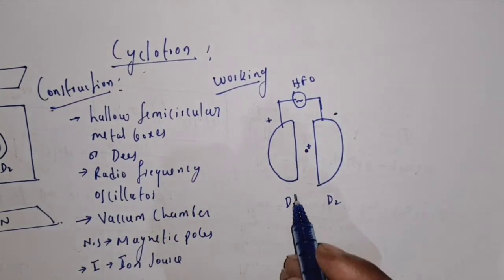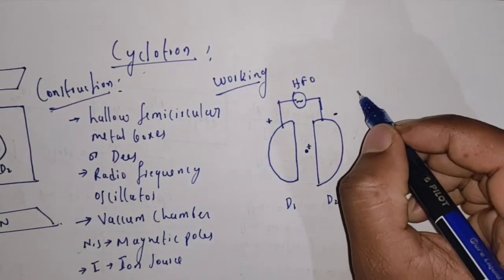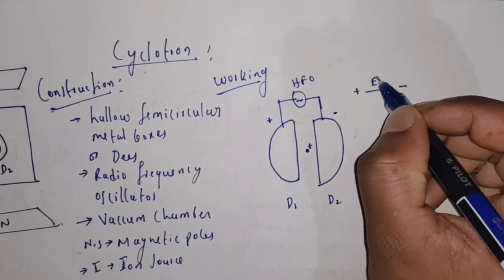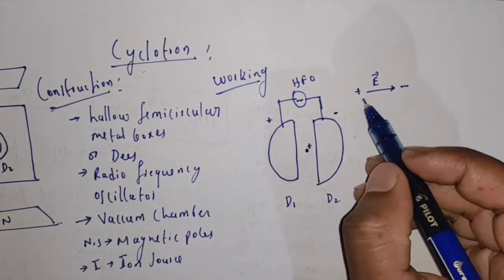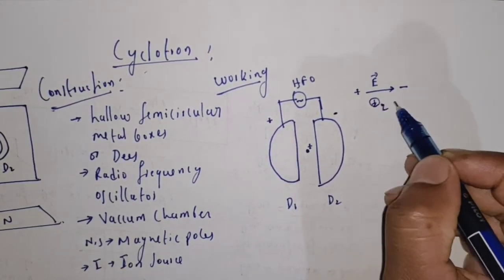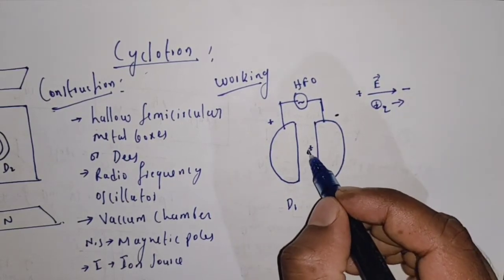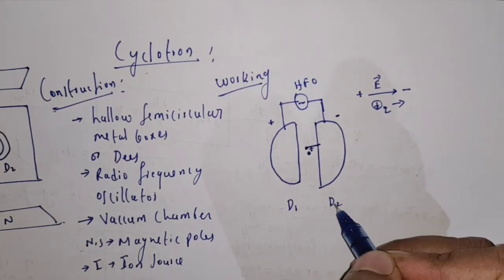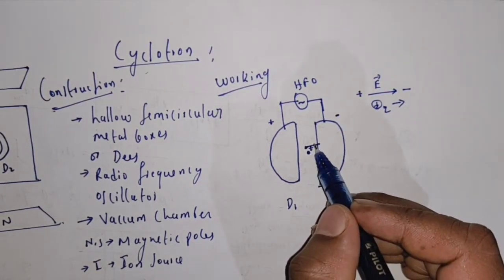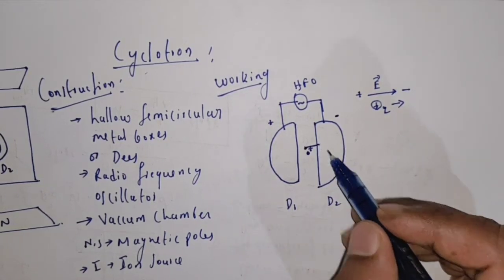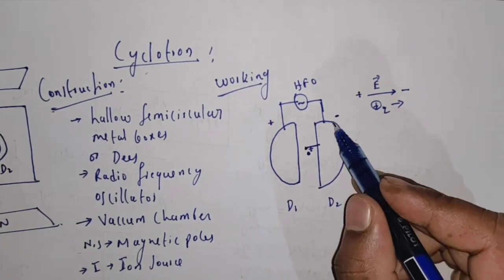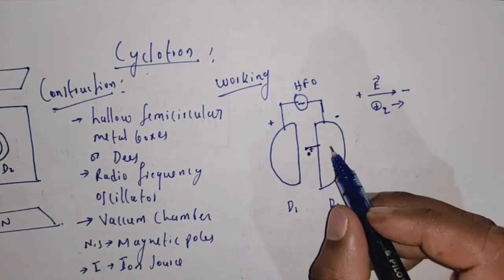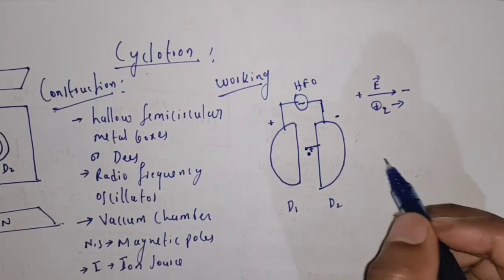From the high frequency oscillator, a negative potential is given to D2 and a positive potential is given to D1 initially. An electric field is developed from positive to negative, and this positive charge moves in the direction of the electric field — that is, this charge moves towards D2 with velocity V0.